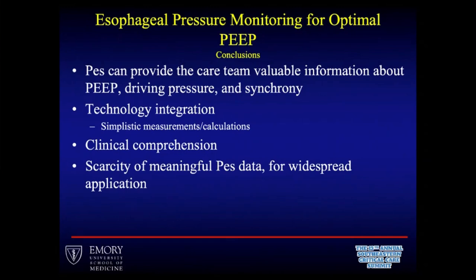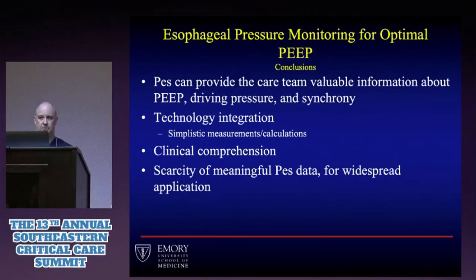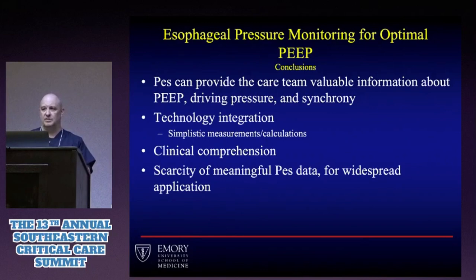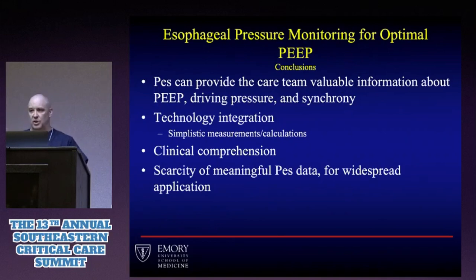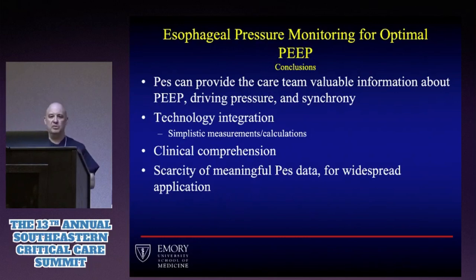In conclusion, esophageal pressure monitoring — depending on the patients, lung injury type, or disease — may provide potentially valuable information about PEEP settings, driving pressure, and asynchrony. Technology integration is a key consideration: currently only two ventilator platforms integrate esophageal pressure monitoring, and only one does the math for you. Monitoring away from the ventilator becomes more complex and introduces more sources of error, requiring pressure unit conversions. The simpler we can make it, the more broadly it will be understood and the better results we'll get.